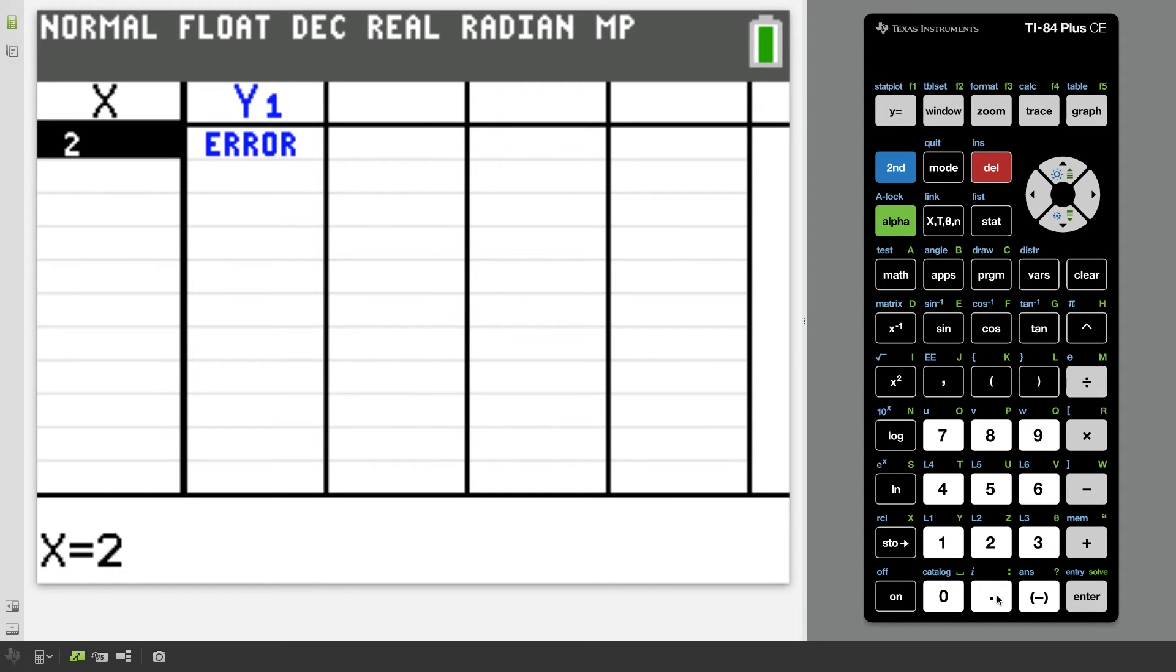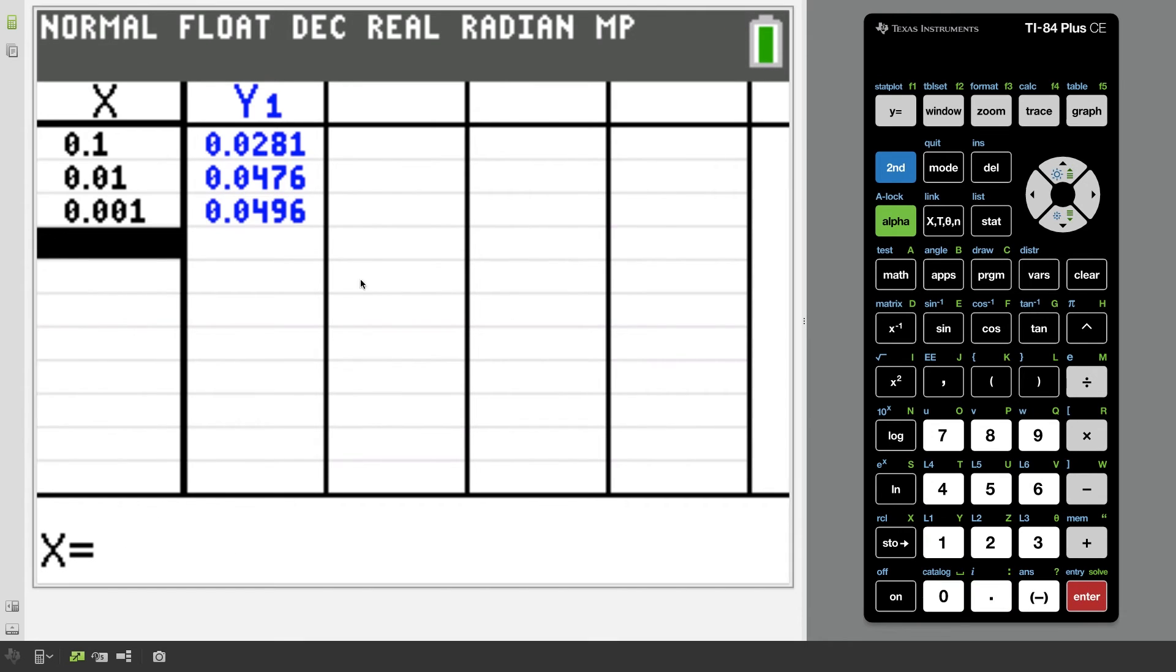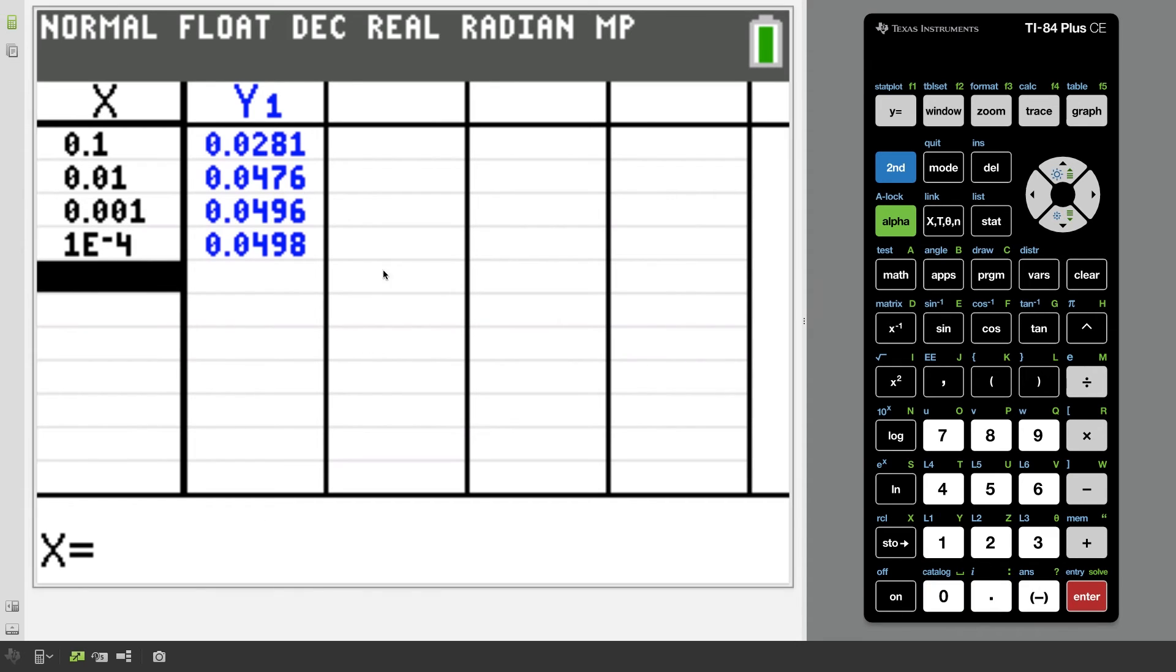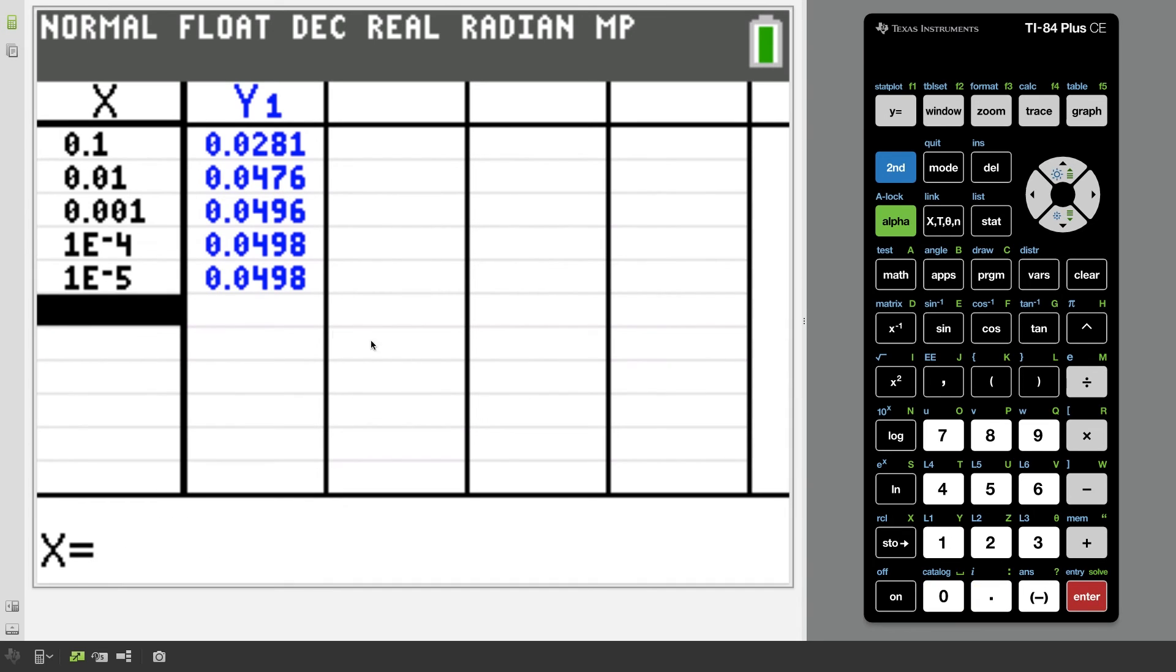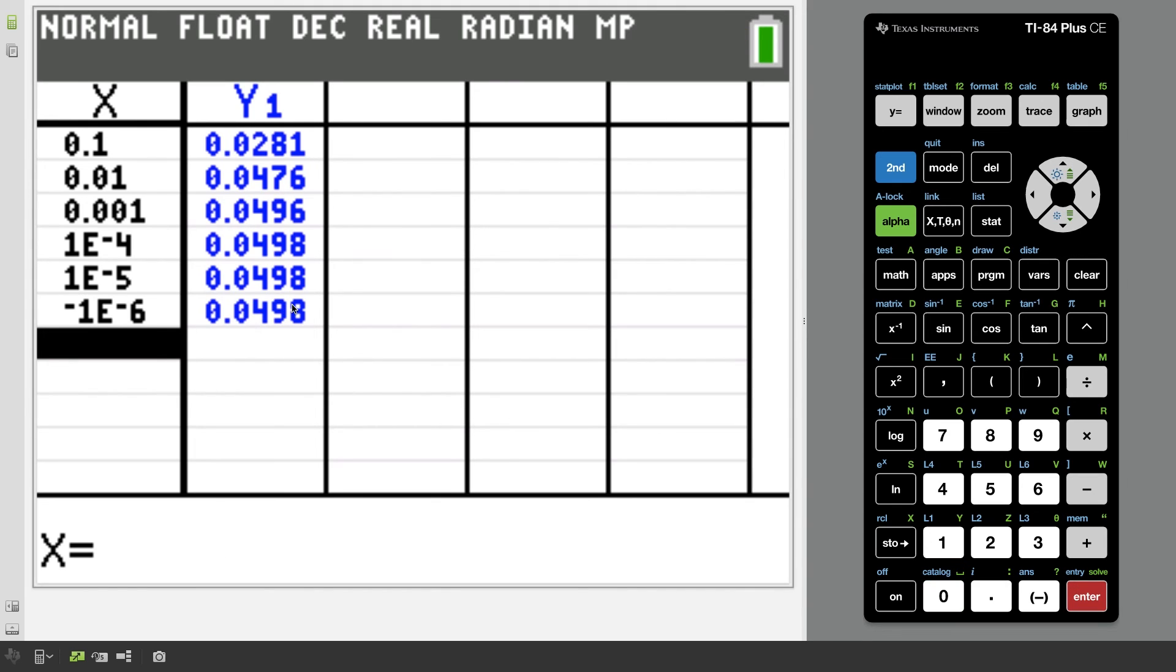And if I type in values slightly bigger than zero, like point one, and then point zero one point zero zero one, you can start to see the trend here of what's happening with our y values that they look like they're heading to point zero four nine eight. And if I do a few more, you can see that it's heading to point zero four nine eight. And if I do that on the left side as well, let's say I get really close to zero, but on the negative side, I punch in a bunch of zeros and a one notice I'm heading to the same place.